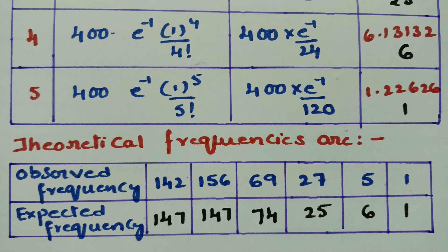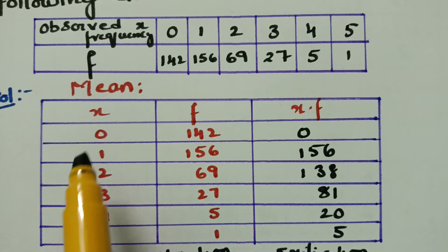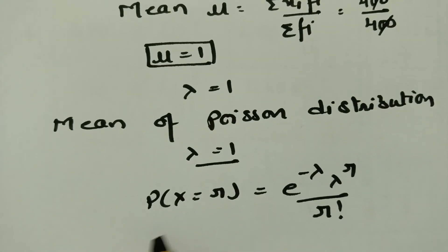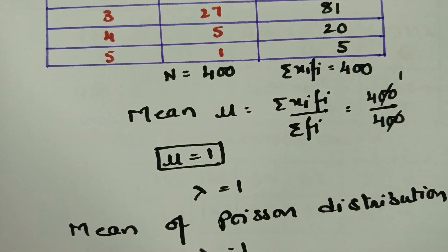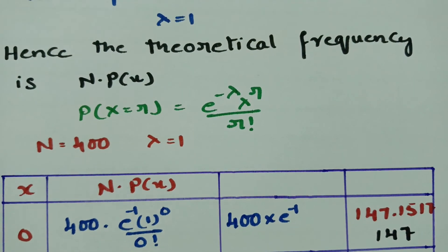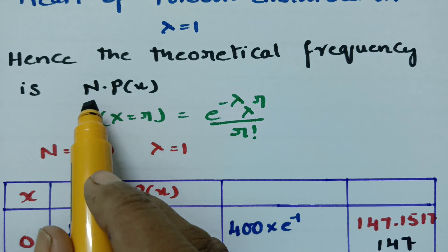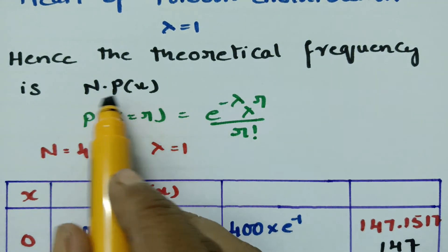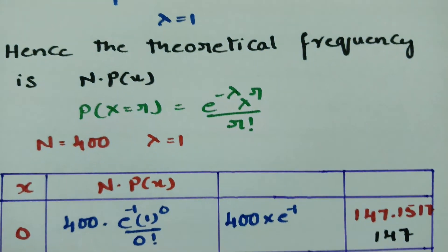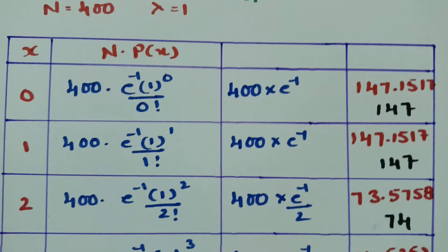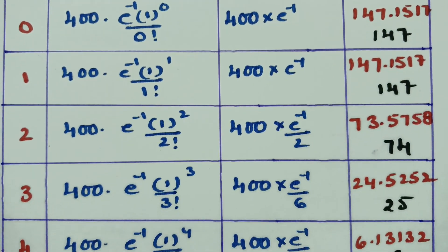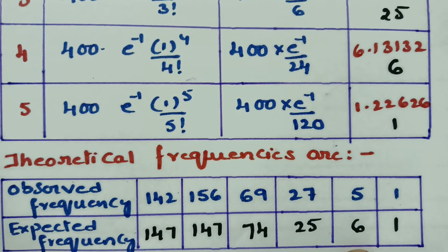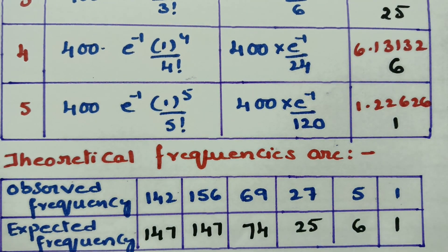Thank you so much for watching. This is quite simple. We find the mean using the formula, and after finding the mean lambda equals 1, we apply the Poisson distribution formula. For finding the theoretical frequencies the formula is n into P(x), where n is the total frequency 400. Substituting r = 0, 1, 2, 3, 4, and 5 gives us the theoretical frequencies. Thank you so much for watching and staying till the end.